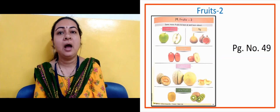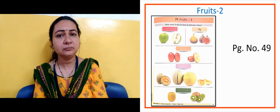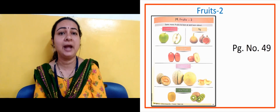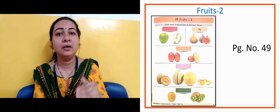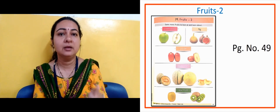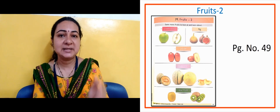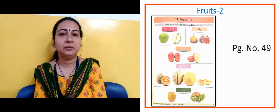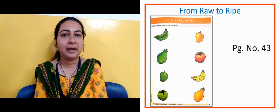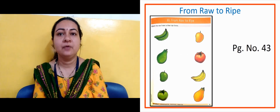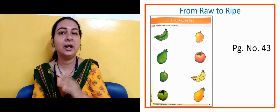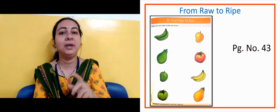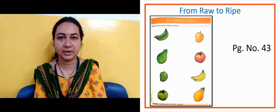Now the next slide, Fruits Part 2, on page number 49. On that we saw green apple, fig, jujube, muskmelon and kiwi. Now the next slide is an activity related to fruits — 'From Raw to Ripe.' We connected the raw fruit to the ripe fruit on page number 43.